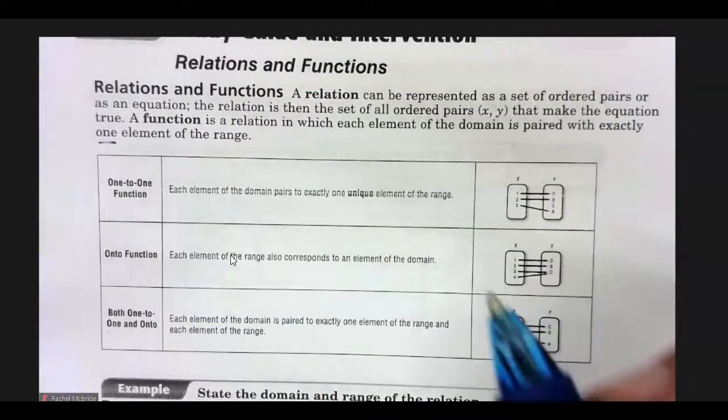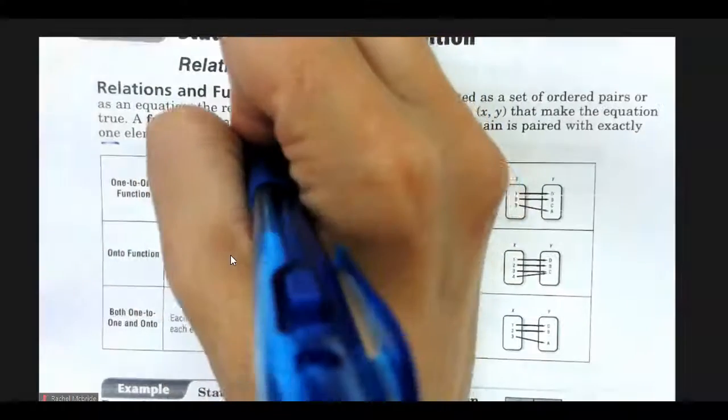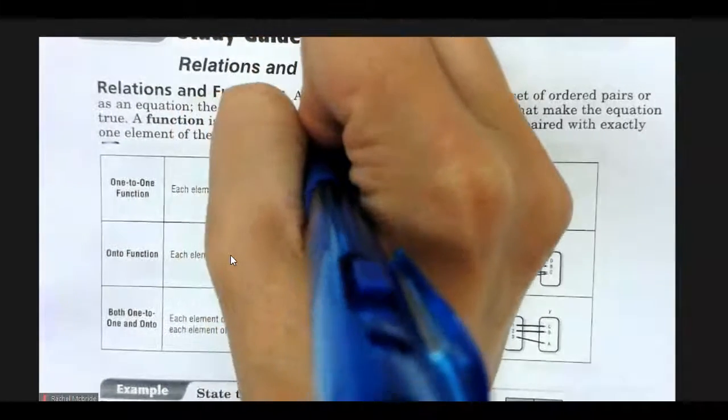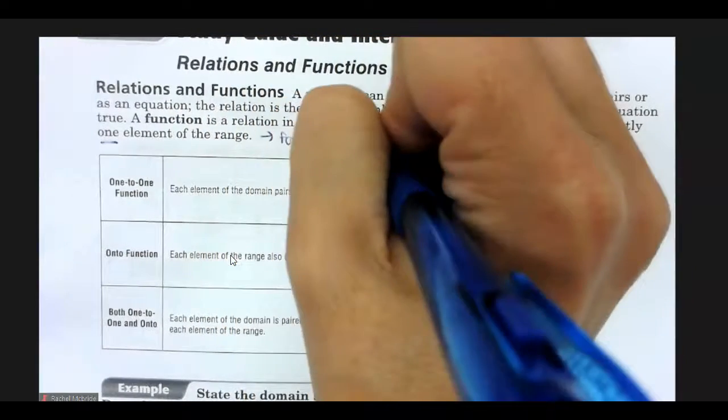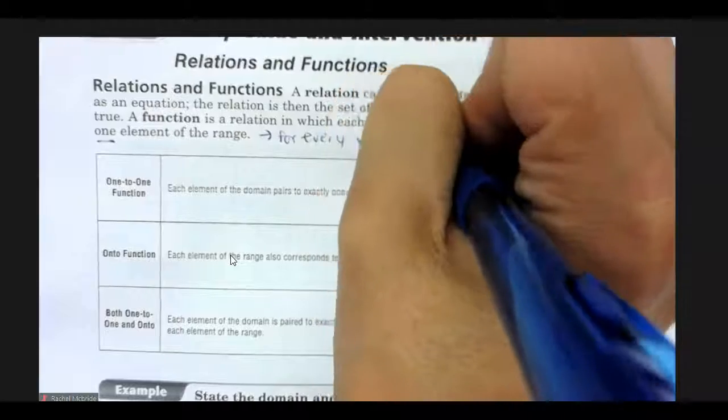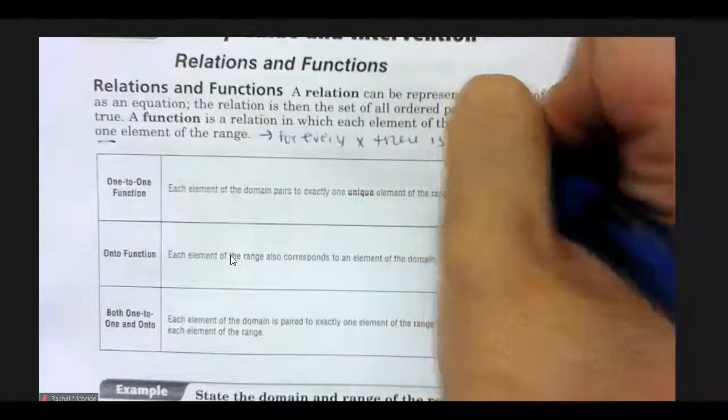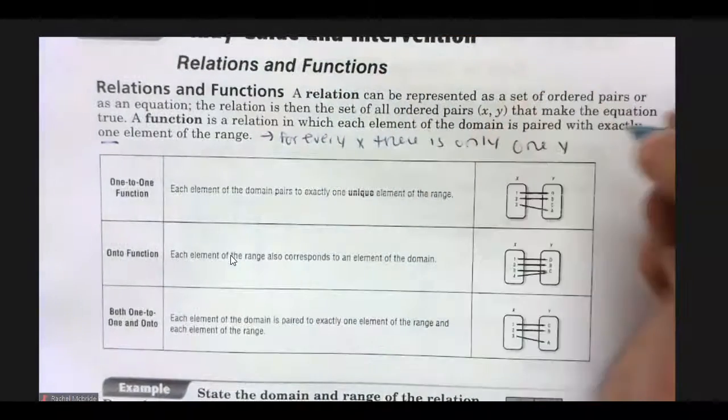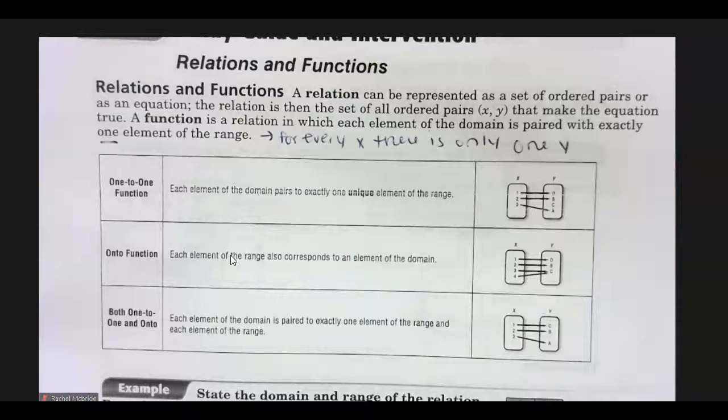So the big idea is that with a function for every x, there is only one y. So for a function for every x, there is only one y.